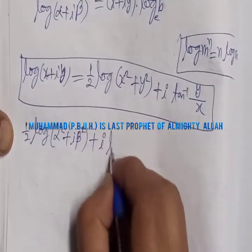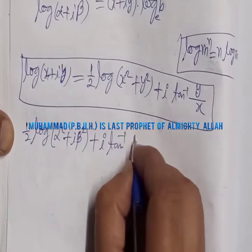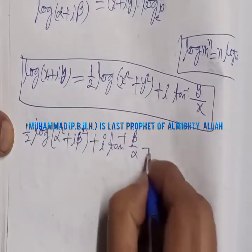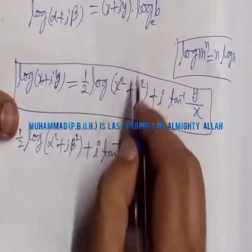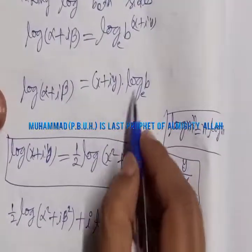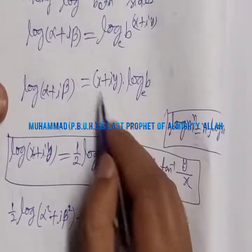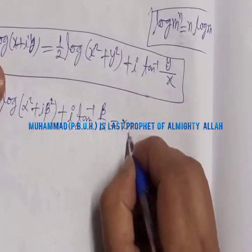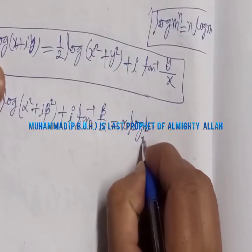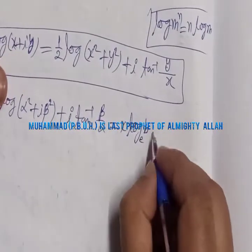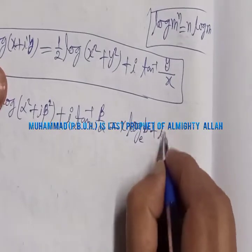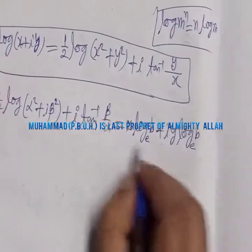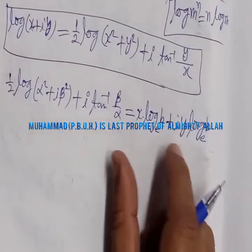On the right-hand side, opening the brackets and multiplying log b into both terms, we get x·log b + i·y·log b. So both sides are now expressed as complex numbers.